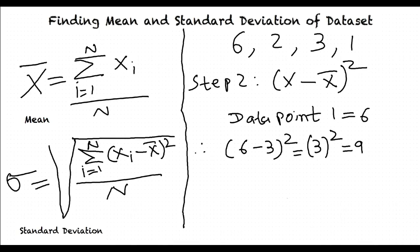For points 2, 3, and 1, the square distance to the mean will be 1, 0, and 4.